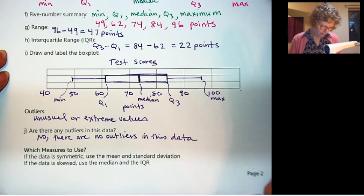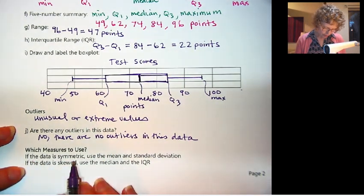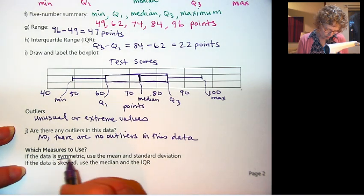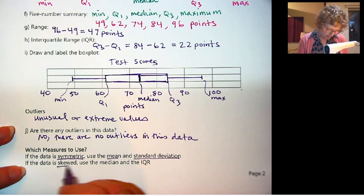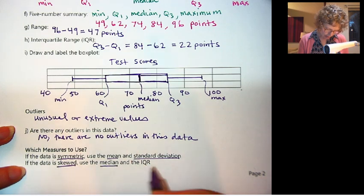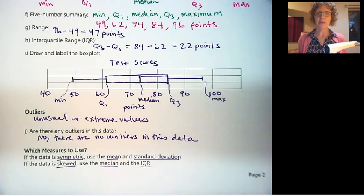Down at the bottom, I just have a reminder which measures to use. So if the data is symmetric, we're going to use the mean and the standard deviation. And if the data is skewed, we're going to use the median and the IQR. So that's about measures of variation. We'll talk about standard deviation in the next one.